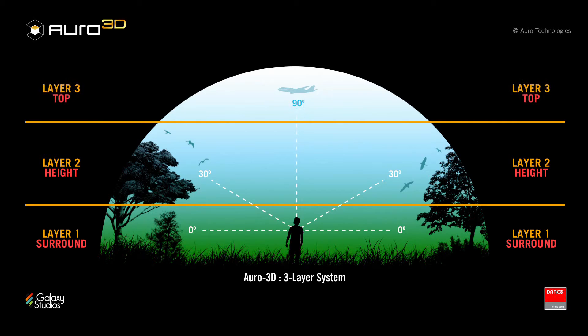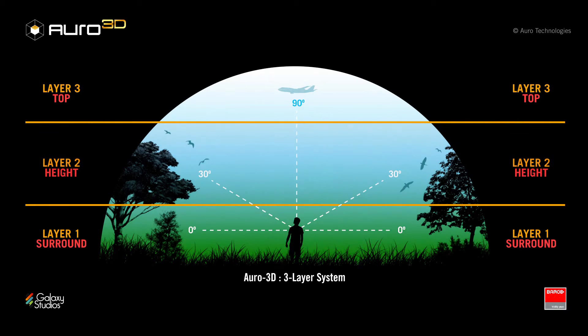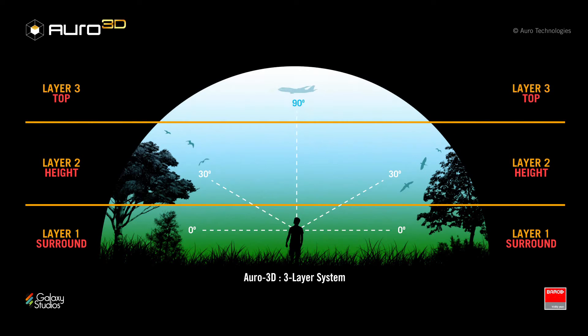This third reproduction channel is also known as the Voice of God channel. Aural 3D achieves a reproduction system that uses these three layers to recreate the most efficient three-dimensional sound format with a minimum number of speakers. Welcome to Aural 3D.